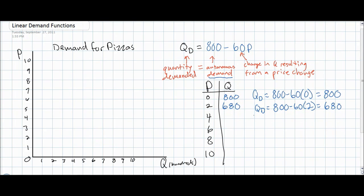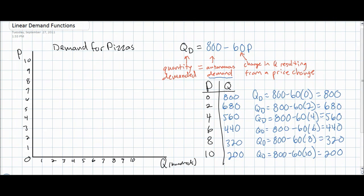We can continue adding different prices into the demand equation to find the quantities demanded at various prices. The price goes to four dollars, and the equation is 800 minus 60 times 4, which equals 560 pizzas. Here we have completed our demand schedule using the demand equation Qd equals 800 minus 60P. Notice the relationship between the price of the good and the quantity demanded. As the price of pizzas increases, as we see in our left column, the quantity demanded decreases, as we see in our right column. Also notice that for every two dollar increase in price, the quantity demanded falls by exactly 120 units.